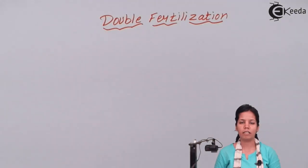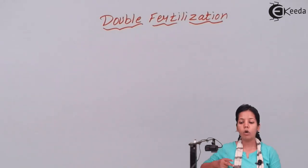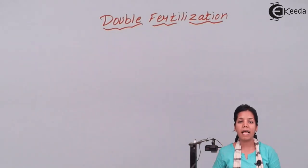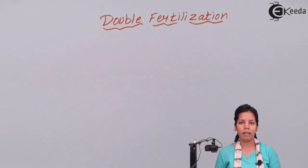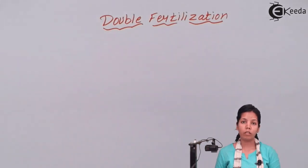Then what is double fertilization? When we say double fertilization, it means there are two male gametes, and these two male gametes are haploid. When we say haploid, it means they have 23 chromosomes. These two haploid male gametes will fuse with two female haploid gametes.